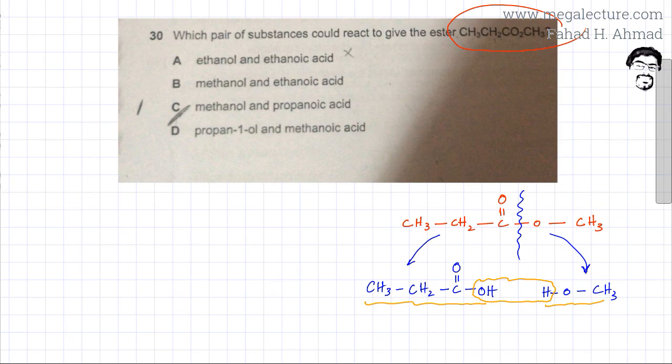So I now just need to name the molecules. This one over here is propanoic acid, whereas this is a methanol molecule. So the answer is going to be methanol and propanoic acid, so it's option number C.